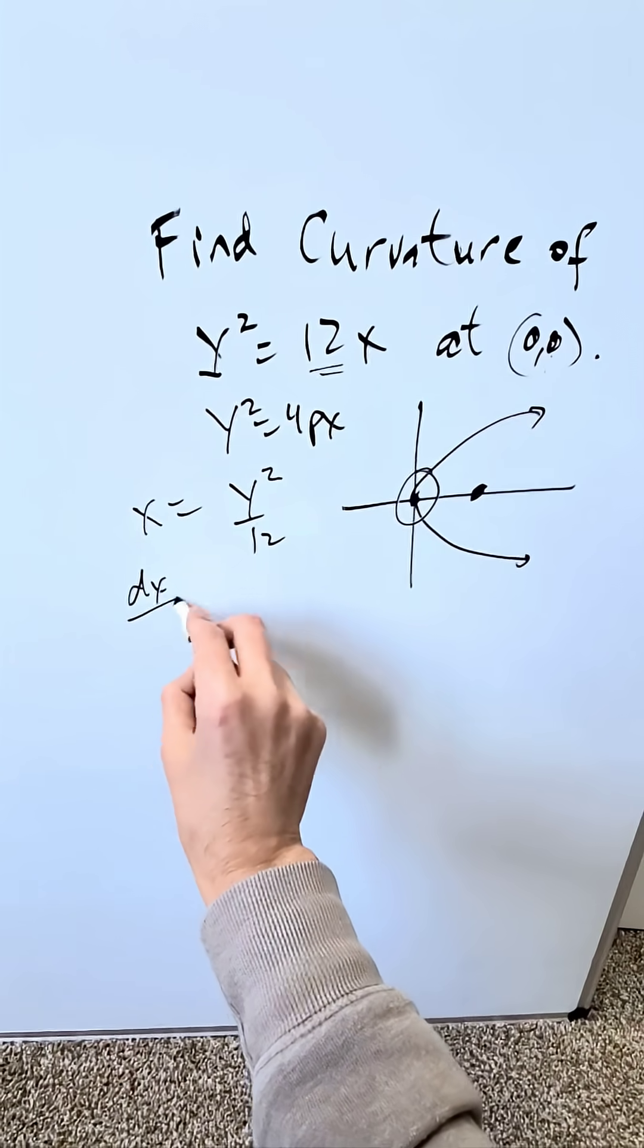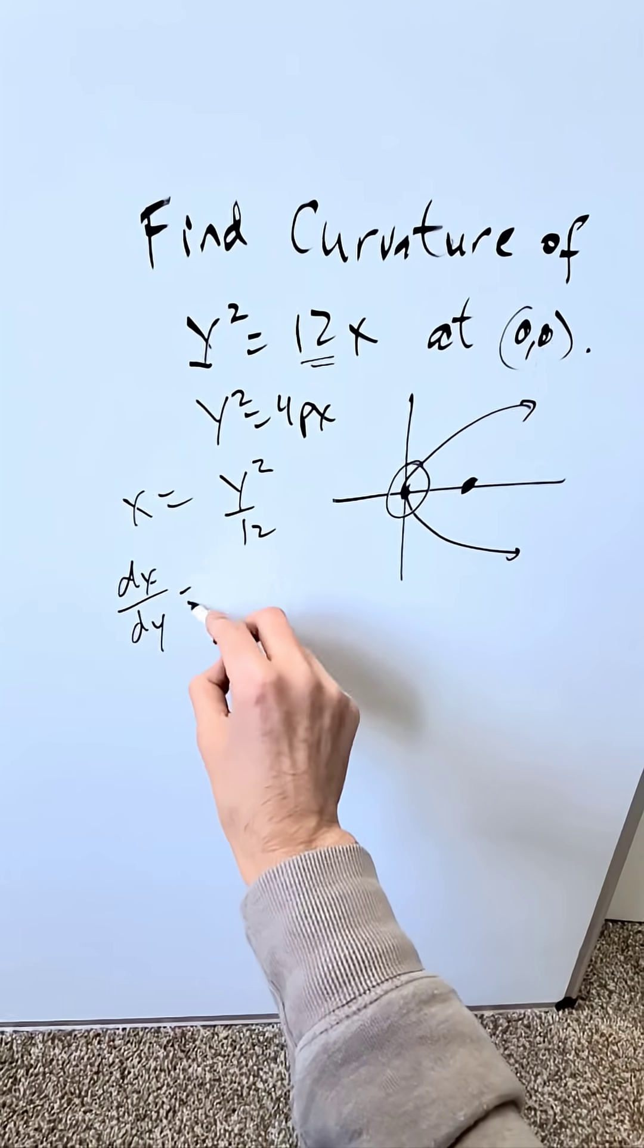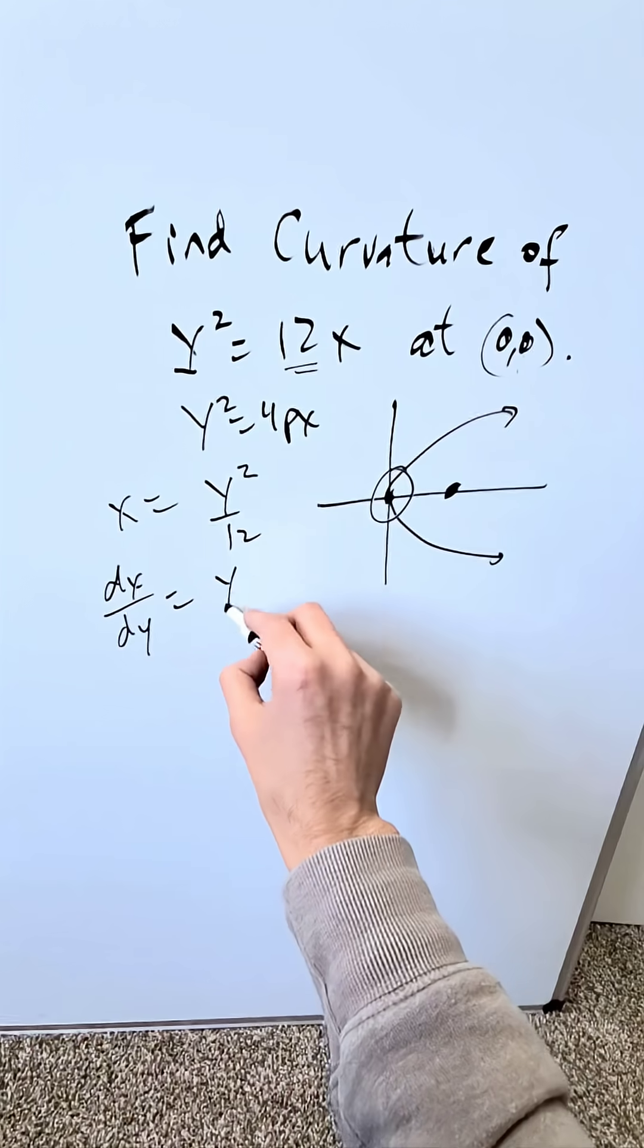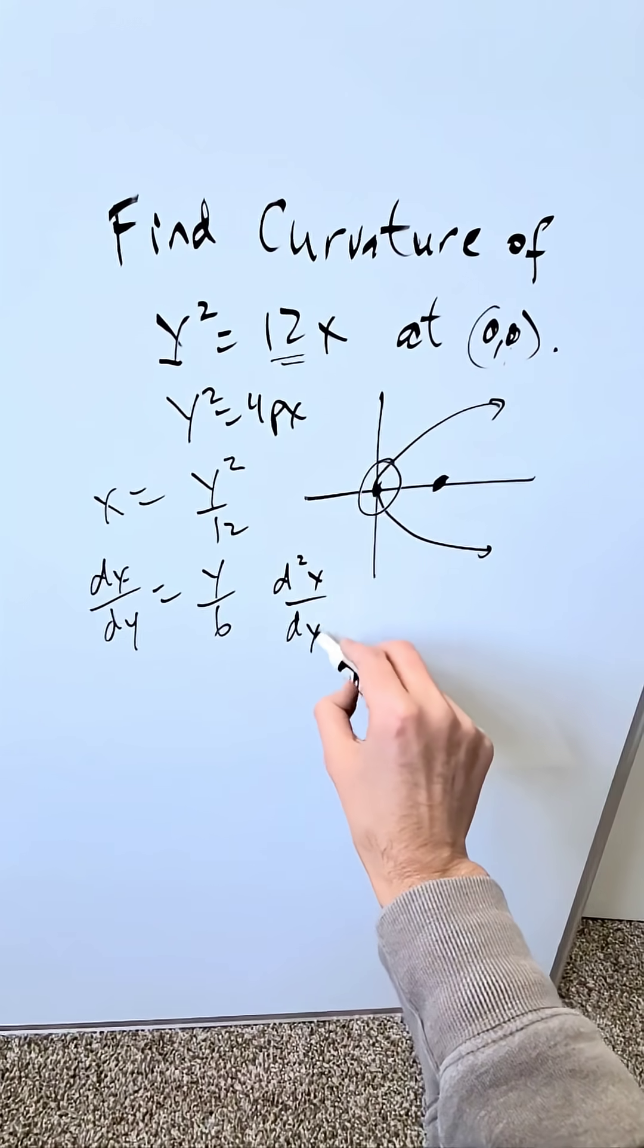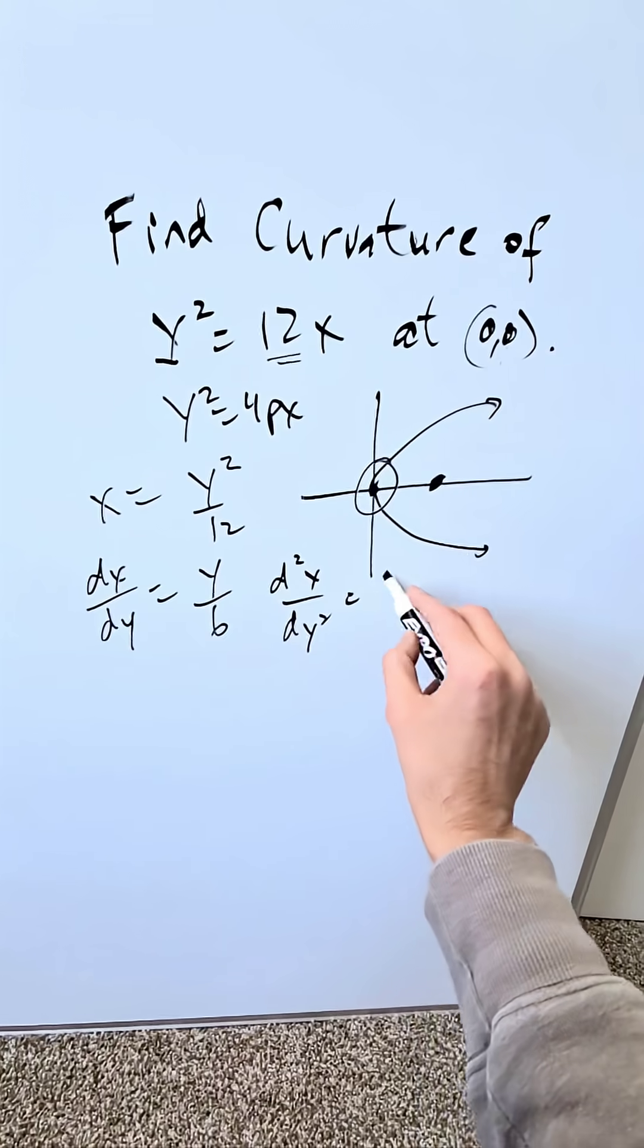If I do a first-order derivative—now look, I'm doing dx/dy—what do I have? 2y/12, which is y/6. If I do a second-order derivative, what do I have? The derivative of this is 1/6.